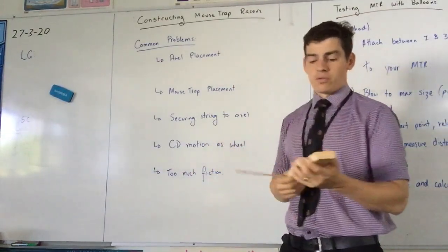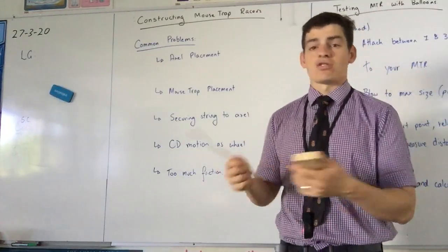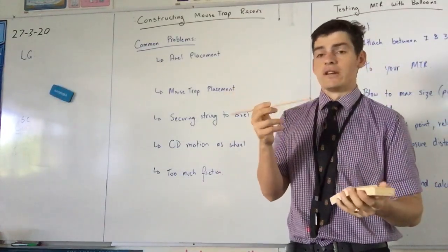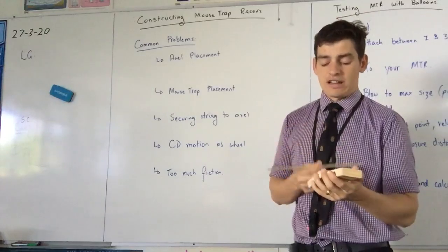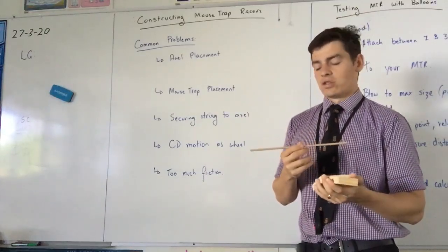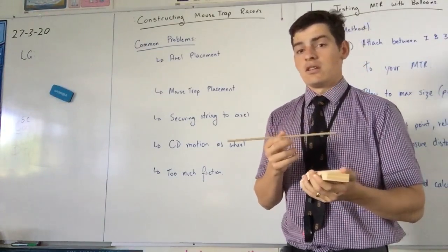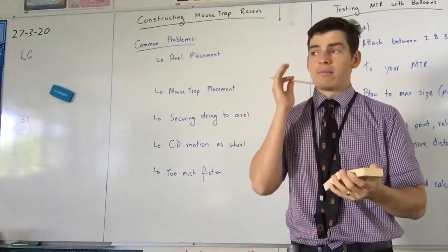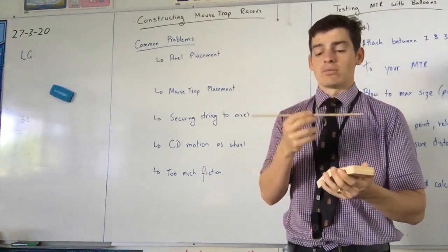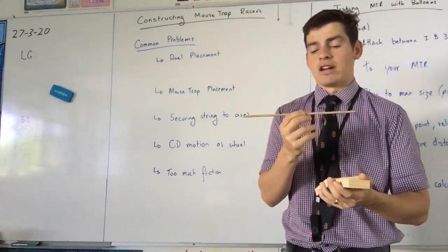Securing the string to the axle. So obviously you're going to need your string to connect your mousetrap to your axle of the back wheel. You need to ensure that there's a way that you can make it so that when you spin, when you drive that mousetrap forward, it spins the axle.